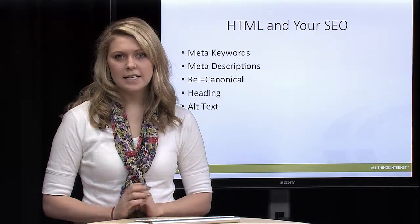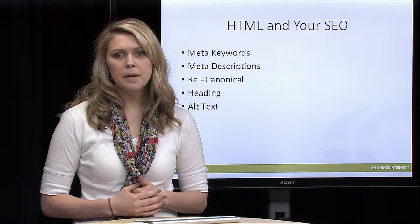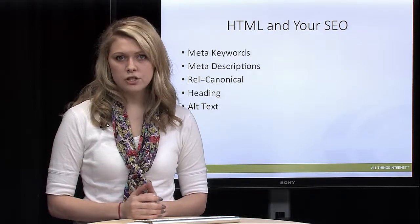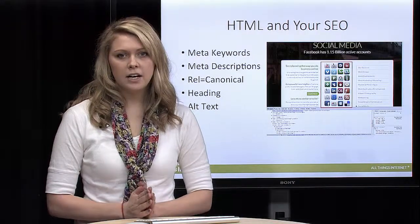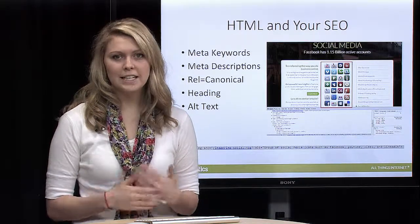The next tag is alt text. This is used when you have an image on your page that doesn't load for everyone — it lets people know what that image is depicting. It also lets search engines know what the image is depicting since they can't actually read the image itself. In the example shown, we have a red box around the image on our website of the social media icons, and when you inspect the element you can see it explains that it is about social media, showing various icons including Facebook, LinkedIn, etc.